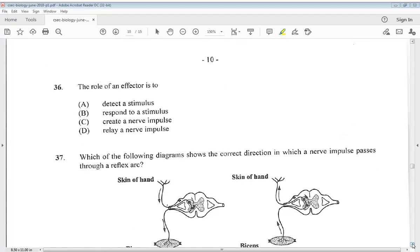Let's go to number 36. The role of an effector is to: A. Detect a stimulus. B. Respond to a stimulus. C. Create a nerve impulse. Or D. Relay a nerve impulse. So the answer for 36 would be B, respond to a stimulus.